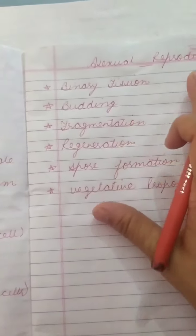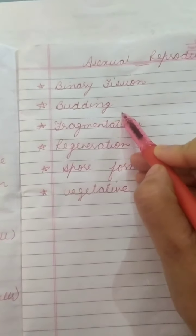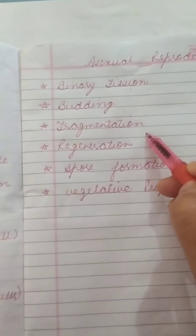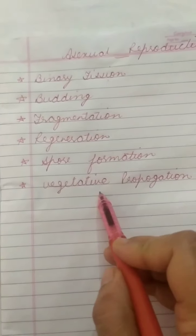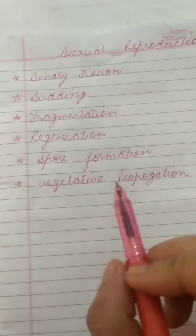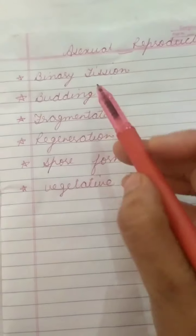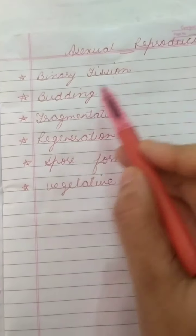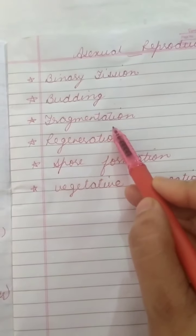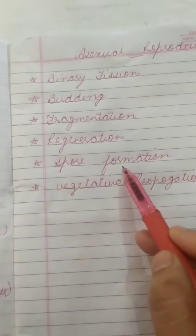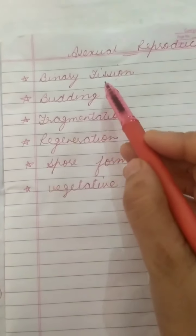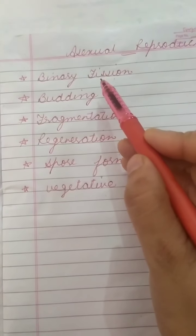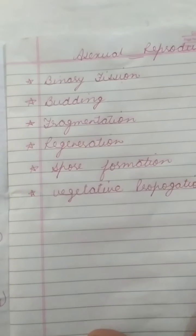Now, asexual reproduction. The different types of asexual reproduction are: binary fission, budding, fragmentation, regeneration, spore formation, and vegetative propagation. We will discuss each type of asexual reproduction one by one.